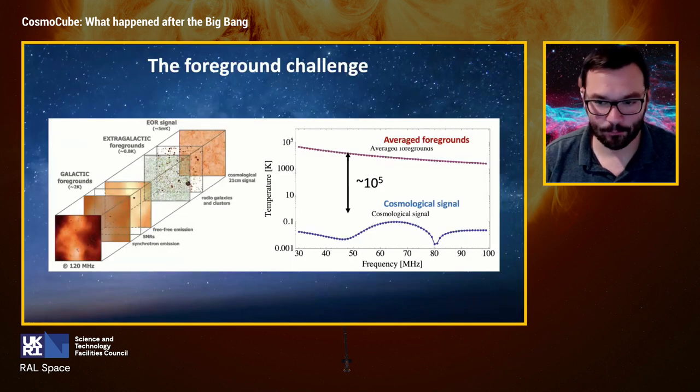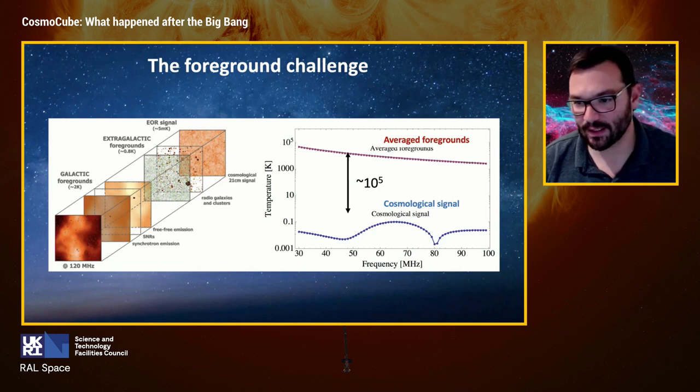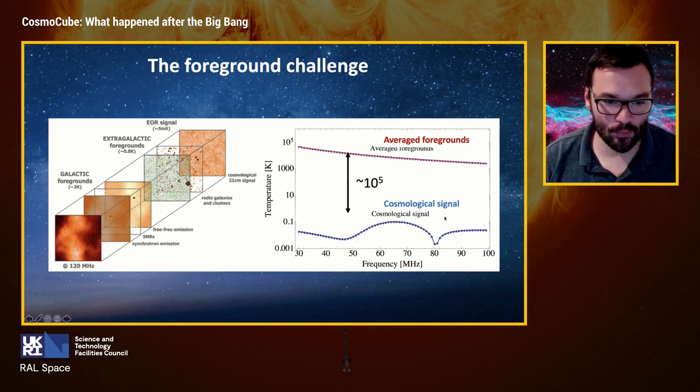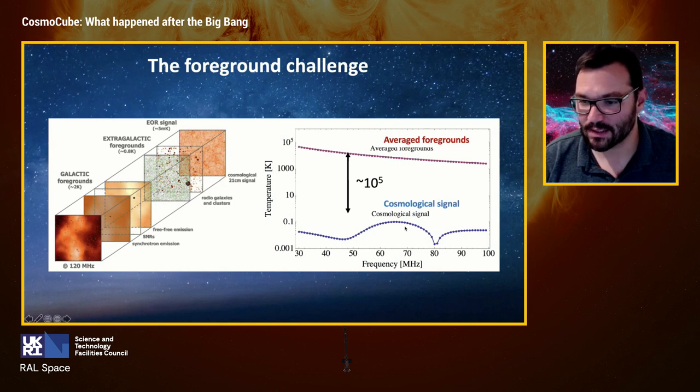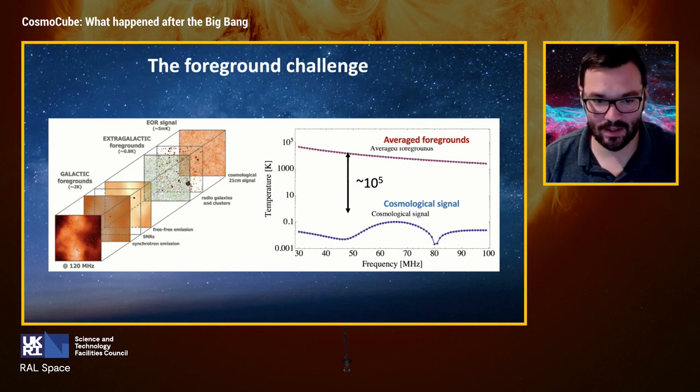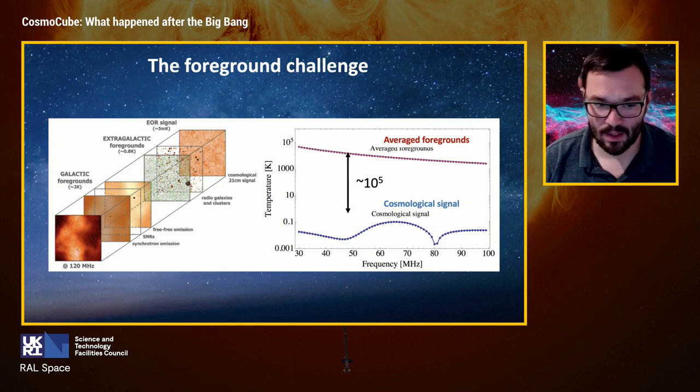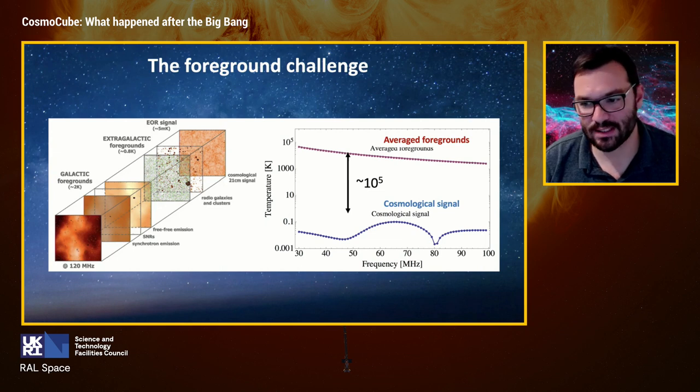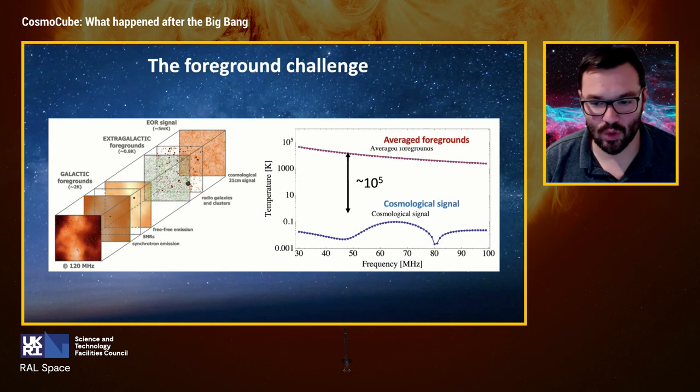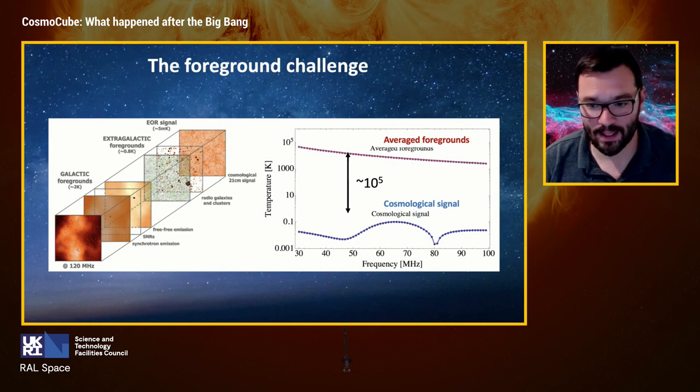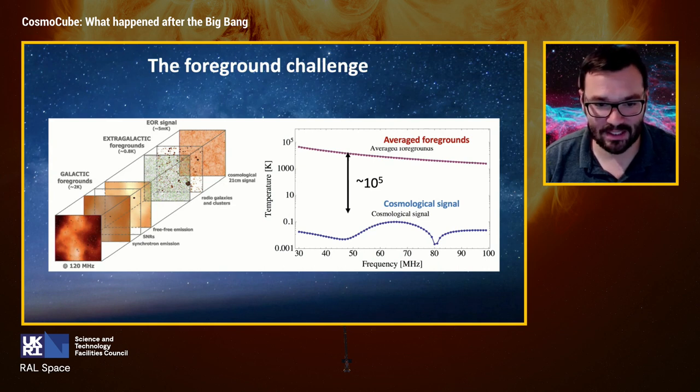Now, what is the challenge here? Well, the challenge is called the foreground challenge. Detecting that 21 centimeter line is an extreme technological challenge because of the amplitude of that signal, a few millikelvins. Its brightness temperature is about five orders of magnitude below what we call foreground signals, emission radiation that is in between that cosmological signal and ourselves, which is mainly things like synchrotron emission from our own galaxy, as you can see in the plot on the left. Therefore, differences in the spectral form, the spectral scales between the cosmological signal and the smoother foregrounds are the best tool we have to try and separate them. Unfortunately, this separation process is not easy and is complicated by things like chromatic effects introduced by our ionosphere, by our telescope itself, electromagnetic reflections in the hardware, etc. So this is an extreme technological challenge.